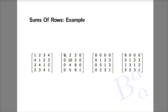We recognize 8 as the only nonzero entry in the first column, and since it's on the diagonal it is an eigenvalue with corresponding eigenvector [1,0,0,0]. We also recognize that 1 is the only nonzero entry in the fourth column, and since it's in the diagonal position, 1 is an eigenvalue with corresponding eigenvector [0,0,0,1].